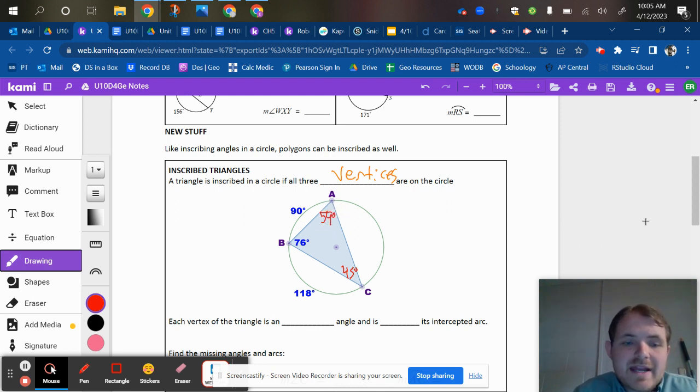Okay, and then if I double 76, that's going to give me this last pink arc over here. 76 times 2 is 152 degrees.